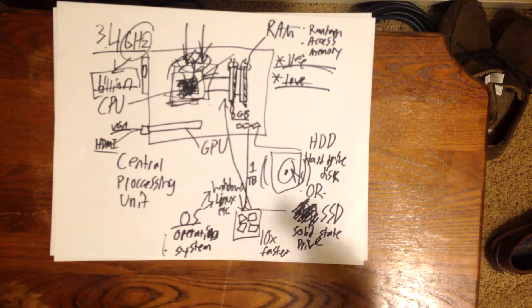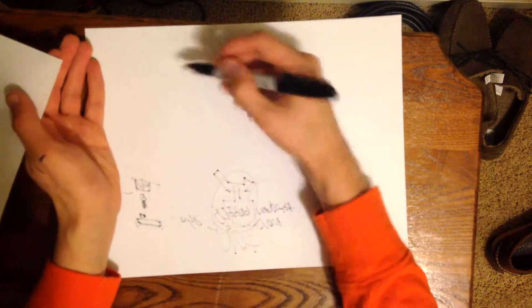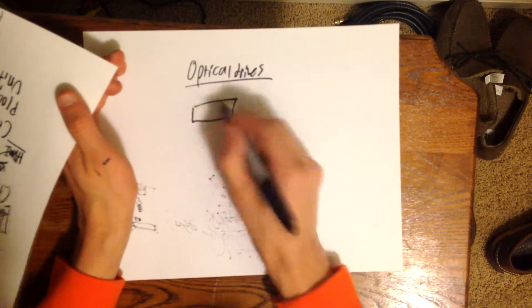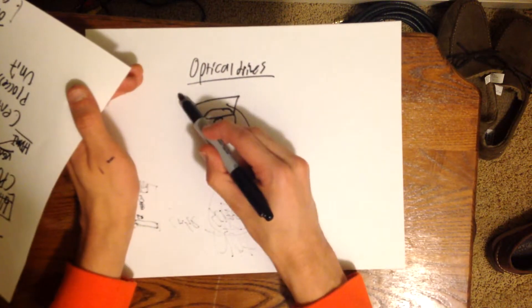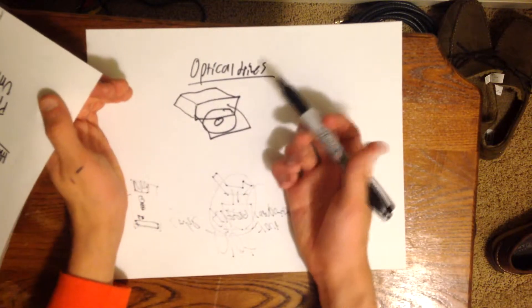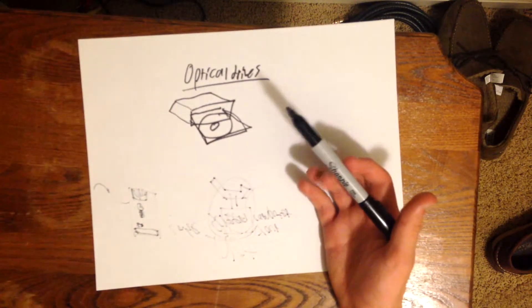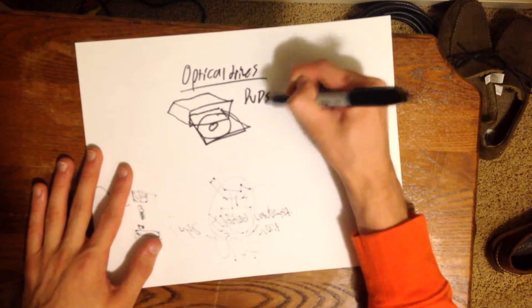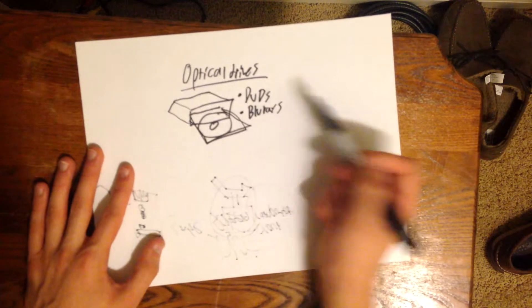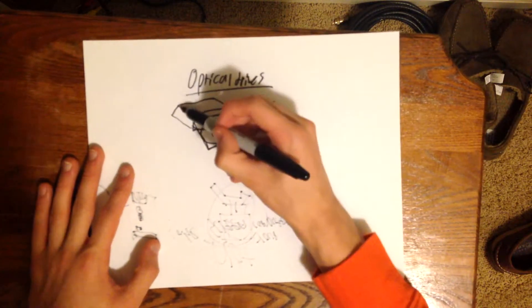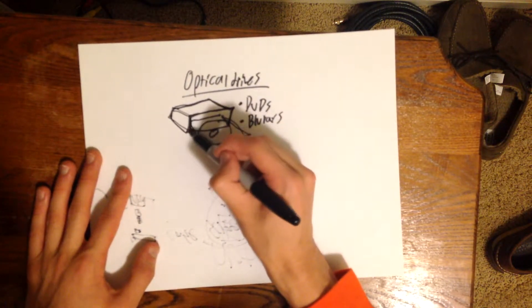Something else worth mentioning are optical drives. Optical drives are just any disk drive. Usually you want to install your operating system using an optical drive. If you want to watch DVDs or Blu-rays, you also need an optical drive. The same goes for burning — if it's not set up to burn a DVD or Blu-ray, it won't just be able to do that out of the box.